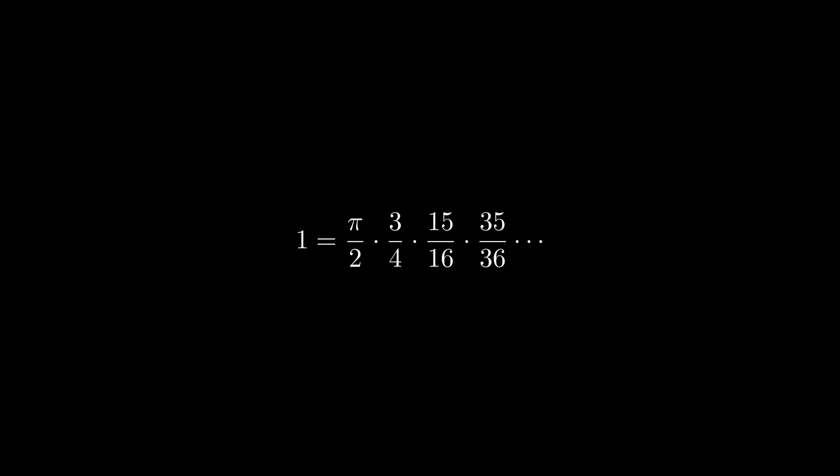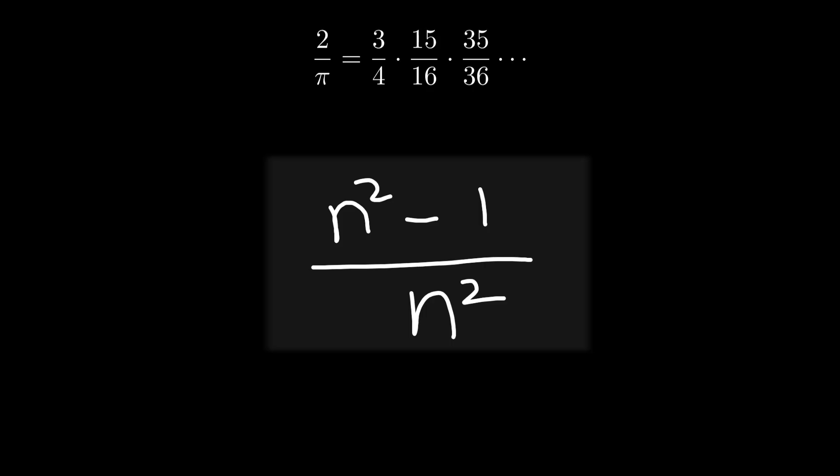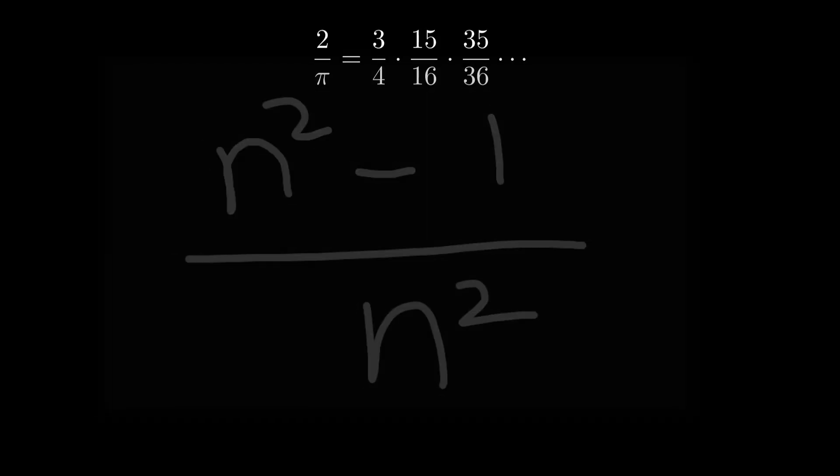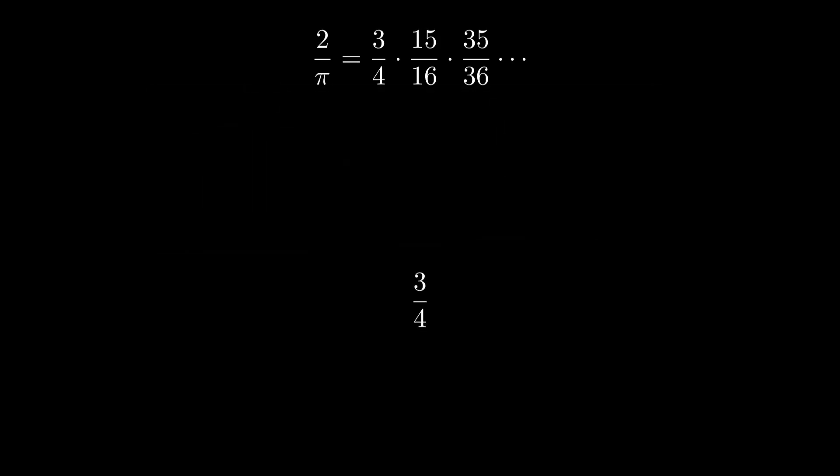Now let's divide both sides by pi over 2, or equivalently multiply by 2 over pi. Finally, let's express each of these fractions as a product of two terms using the difference of squares: n squared minus 1 equals n minus 1 times n plus 1. For example, 3 fourths equals 2 minus 1 times 2 plus 1 over 2 squared, which is 1 times 3 over 2 times 2, or 1 half times 3 halves.